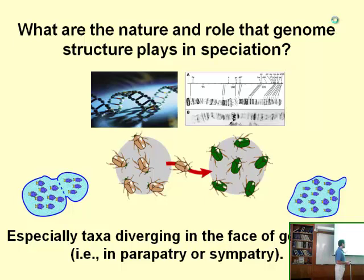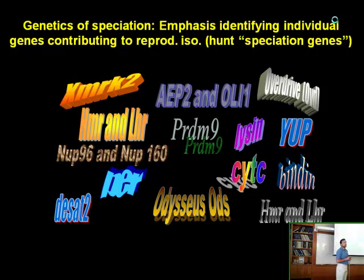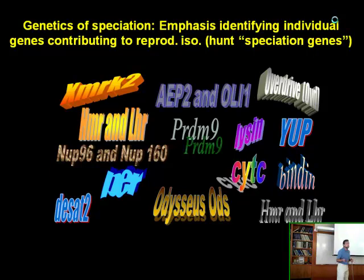That is, in a geographic context of what we'd call parapatry—partially geographic overlap of populations—or sympatry, more complete geographic overlap of populations. We've learned quite a bit about the genetics of speciation in the last couple of decades, particularly with an emphasis on identifying individual genes contributing to reproductive isolation—the hunt for speciation genes—which has been informative about the genetic basis of reproductive isolation.